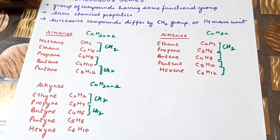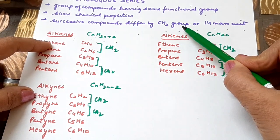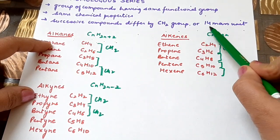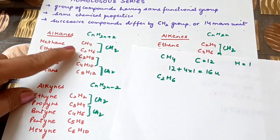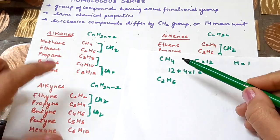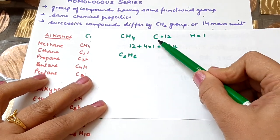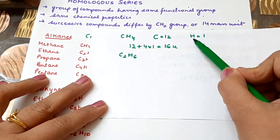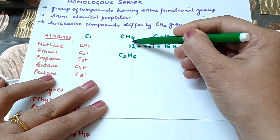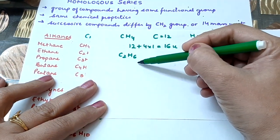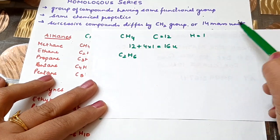Now let's understand what 14 mass units means. We have seen how the CH2 group varies. Now, for example, if we take methane — CH4 — and ethane — C2H6 — their molecular masses differ by 14 mass units. The atomic mass of carbon is 12 and hydrogen is 1.